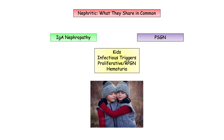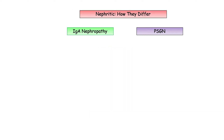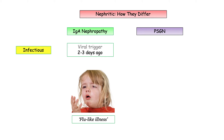The question writers will take advantage of these overlap features, but ultimately it is the differences that will form the substance of test questions. So how they differ is the focus of the remainder of this video. Let's begin by examining the role of infection, focusing first on IgA nephropathy.